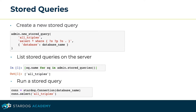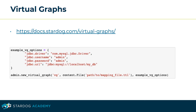We can create a new stored query using the new_stored_query method, or we can list stored queries on the server using the stored_queries method. We can also run a stored query by calling select on a Stardog.Connection and passing in the name of the stored query. We can also use PyStardog to create virtual graphs, creating an object called ExampleVGOptions that contains the JDBC driver class name, the username and password for the remote database server, and the JDBC URL. We pass this object, a mapping file, and a name to the admin class's new_virtual_graph method.